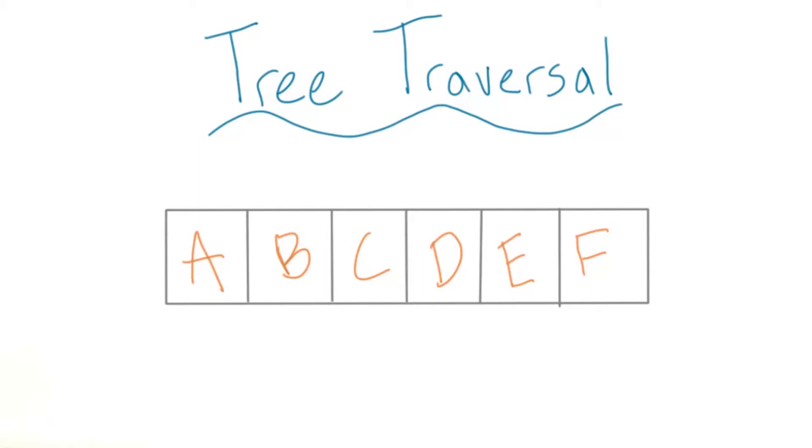When we looked at list data structures, traversal was pretty straightforward. We just needed to go through the list in order to make sure we looked at every element.